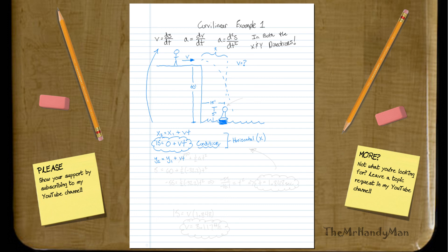But since V is not vertical in any way, this actually just zeroes out. And then you have plus one-half At squared.